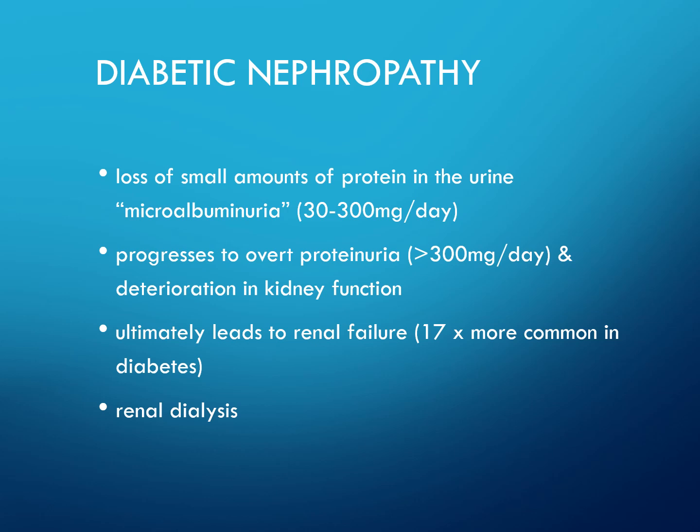Diabetic nephropathy involves loss of small amounts of protein in the urine — microalbuminuria — at 30 to 300 milligrams per day. This progresses to overt proteinuria, greater than 300 milligrams per day, and deterioration in kidney function, leading to renal failure. Patients may ultimately require renal dialysis.